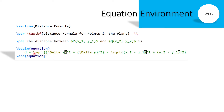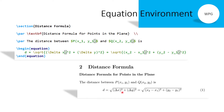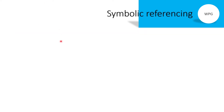In the equation environment, write the distance equation formula: d equals the square root of (Δx² + Δy²), which equals the square root of (x₂−x₁)² + (y₂−y₁)². The equation looks like this in the output. Note that the equation is numbered automatically as equation number 1.